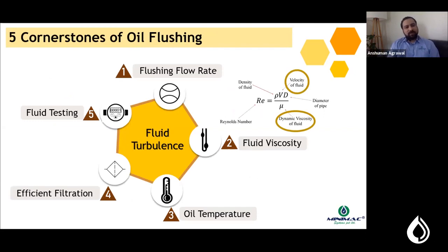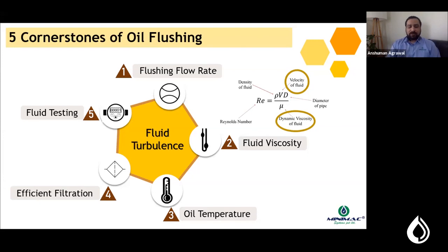Now let's cover the five cornerstones of oil flushing. The first cornerstone is flushing flow rate, which determines whether turbulence will be created in the respective pipeline. As seen in the Reynolds number formula, the required Reynolds number for turbulent flow is 4000, and it is directly proportional to fluid velocity. Therefore, the higher the flow rate, the greater the turbulence and the better the flushing.